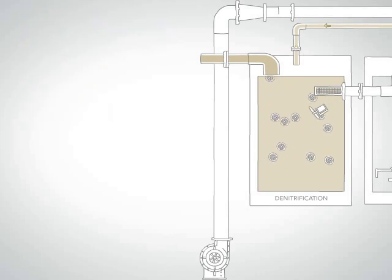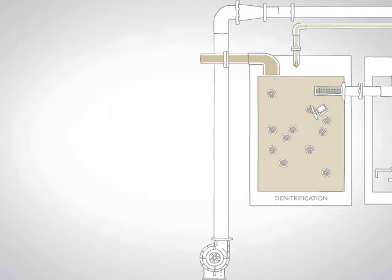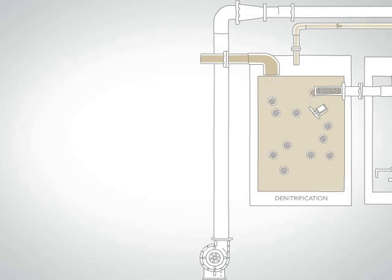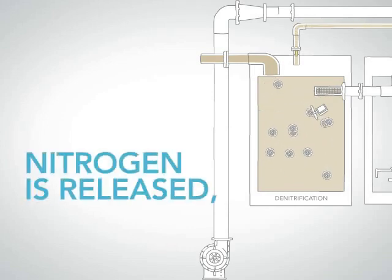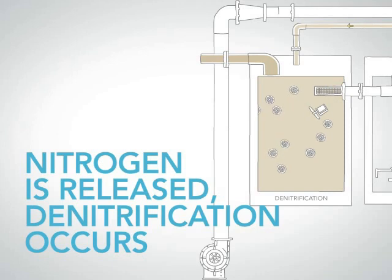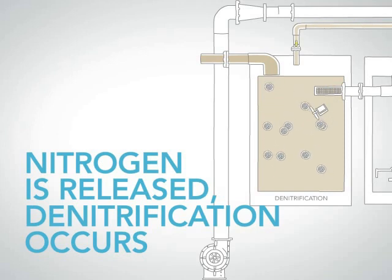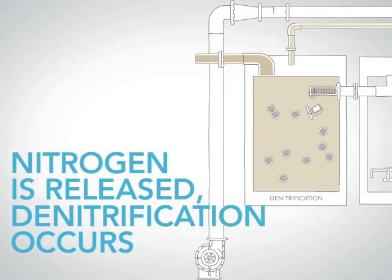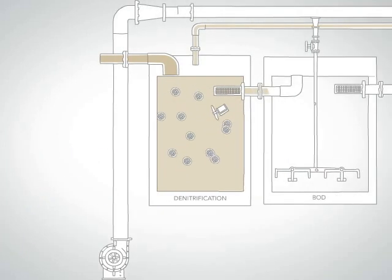A mechanically mixed anoxic reactor combines the influent stream with a recycle stream from the nitrification reactor. At this point, nitrogen is released into the atmosphere in a process called denitrification.